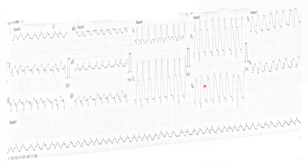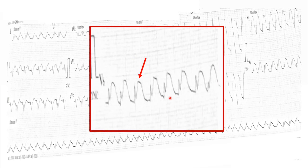V4, V5, and V3 also show abnormal-looking complexes. There is something going on with the ST segment. I will mark the arrows for you. Never miss ST segment elevation — and in this case, we are finding ST segment elevation.